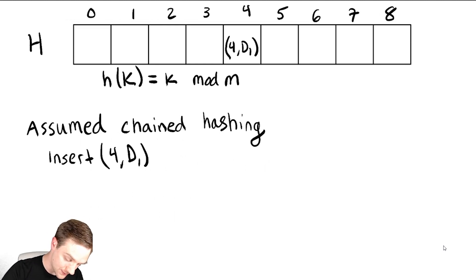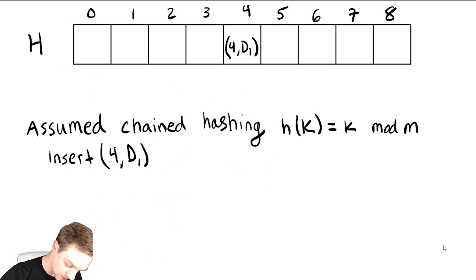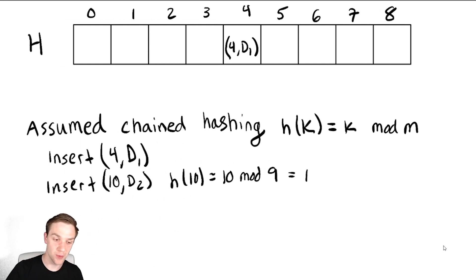Let's do some more insertions and see what happens. Let's say we did an insert of 10, d2. That means we need to be able to compute what is h of 10, which is 10 mod 9. This hash table has 9 entries.